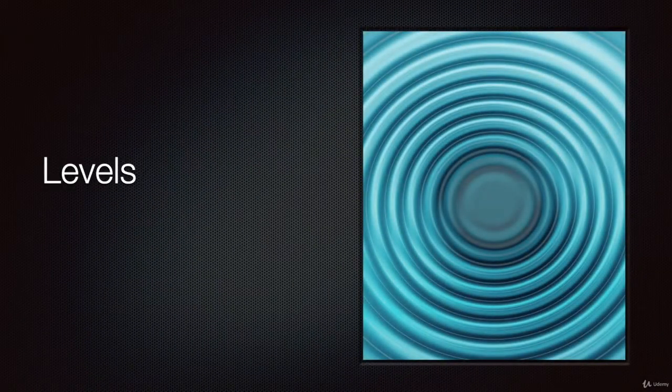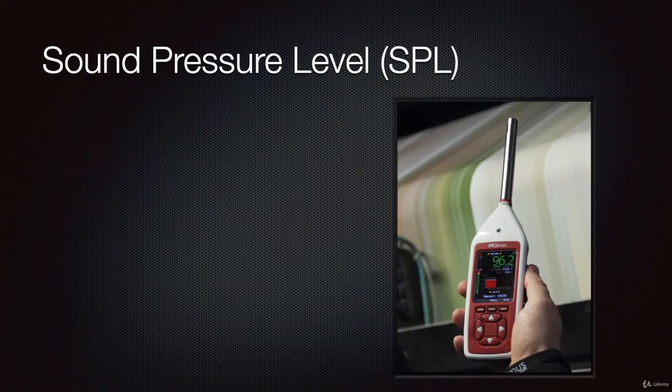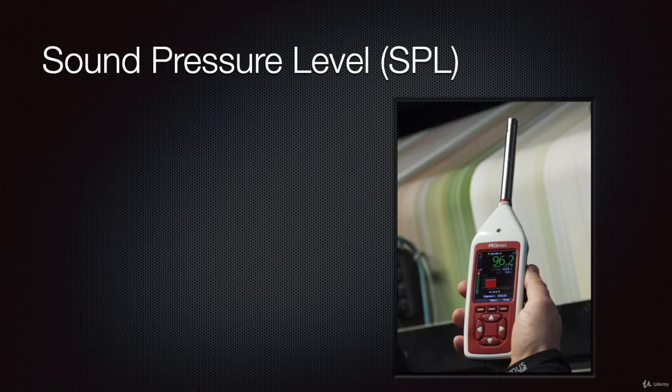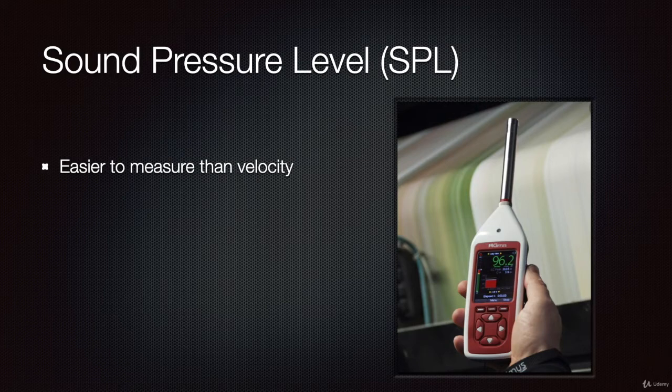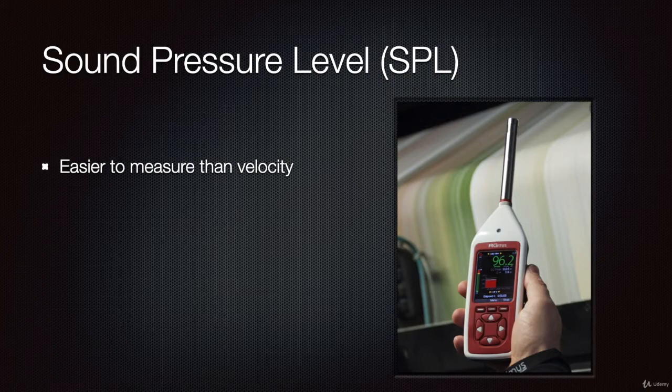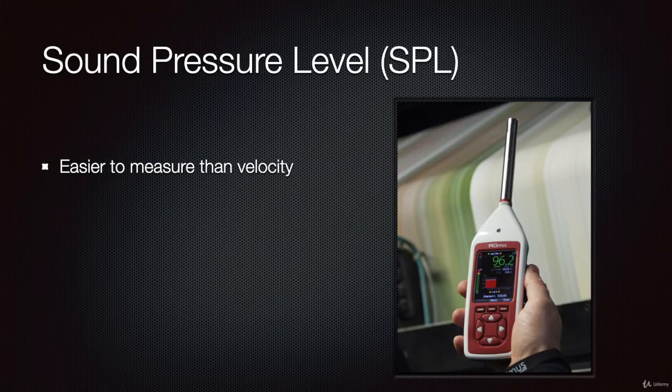Now let's talk about levels. The most important level in acoustics is called sound pressure level or SPL. Why do we use pressure? We know that the sound wave has two components, pressure and velocity, but pressure is easier to measure than velocity, and that's why it's the common unit to measure the intensity of a sound wave.